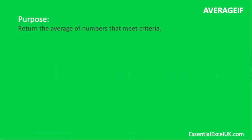Moving on to the next one, we've got AVERAGEIF. The purpose of AVERAGEIF is to return the average of numbers that meet criteria. This goes one step further — whereas AVERAGE gives us the average for every reference entered into the function, AVERAGEIF allows us to apply criteria so we only average those cells that meet that single piece of criteria.